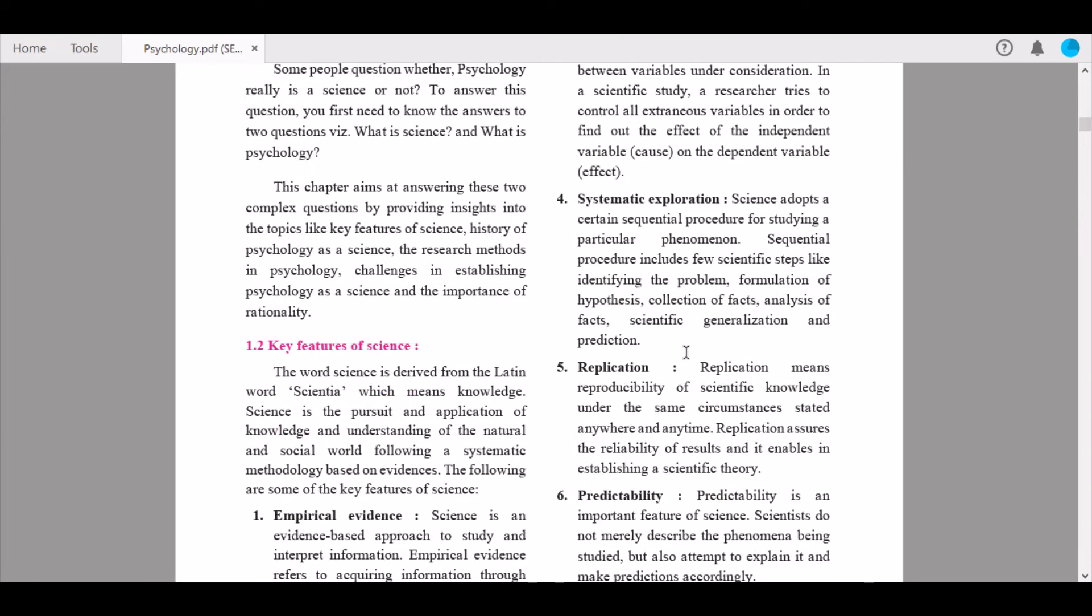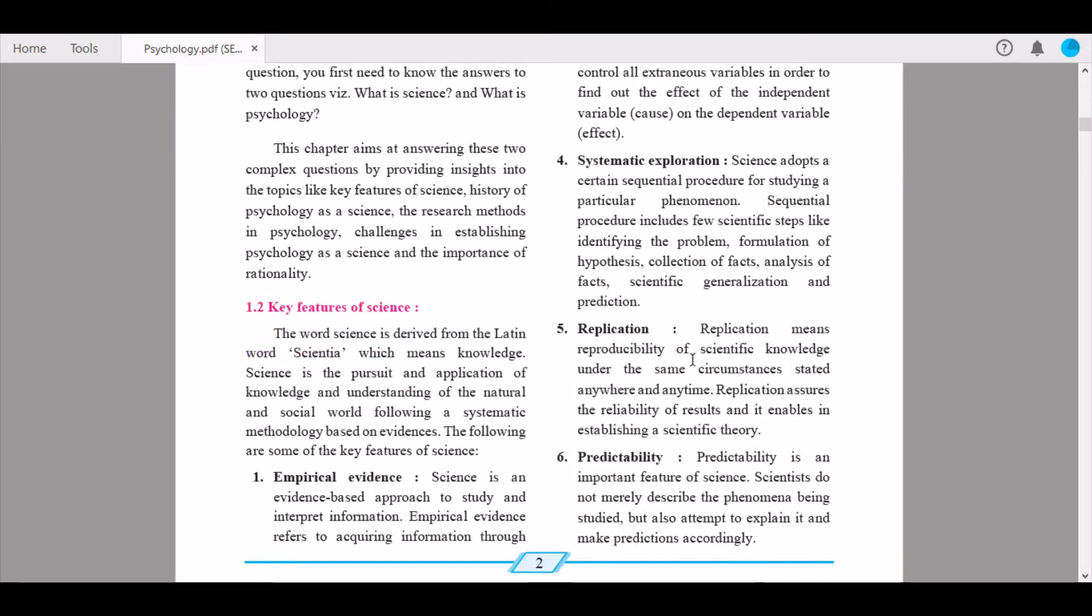Fifth is replication. Replication means reproducibility of scientific knowledge under the same circumstances stated anywhere and anytime. Replication assures the reliability of results and enables establishing a scientific theory. Replication is a very important concept. Please go through it thoroughly.